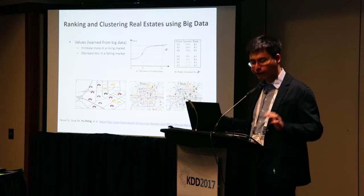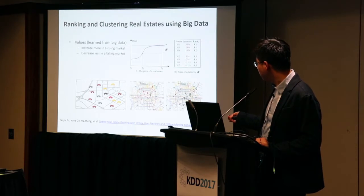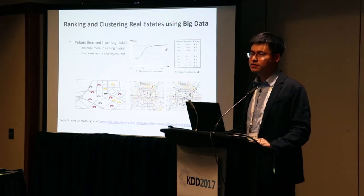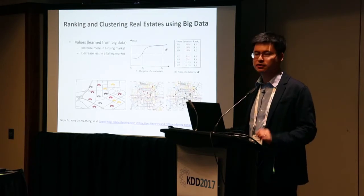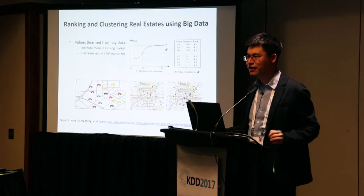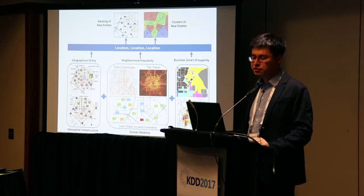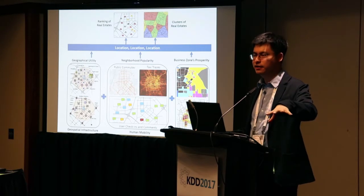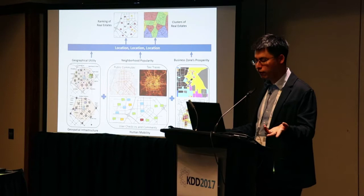What determines the value of a real estate? There's an old saying: the value is determined by three factors — location, location, and location. How to quantify location using big data: the first 'location' refers to geographic utility — quantified by point-of-interest data around the real estate (number of restaurants, shopping malls) and transportation data around the place.